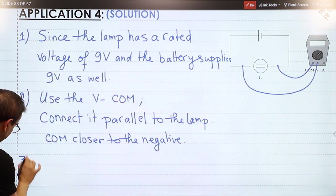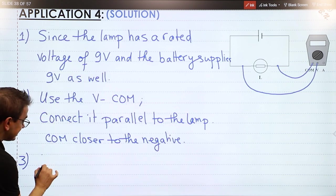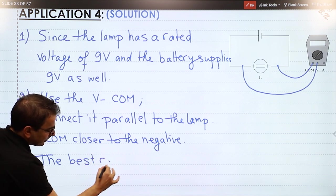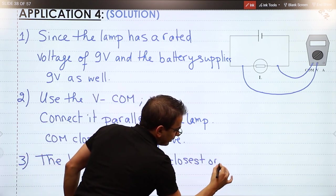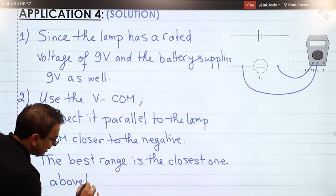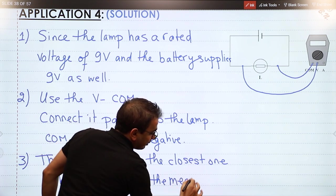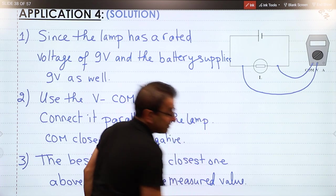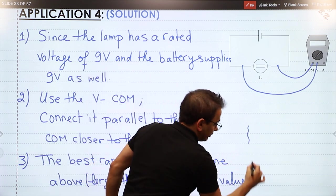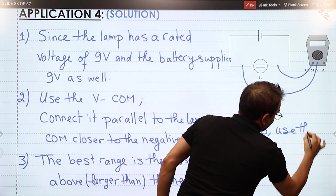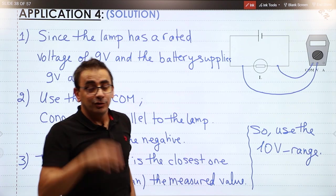For part 3, the available ranges are 2, 10, 20, and 200 volts. The best range is the closest one above the measured value - larger than the measured value. We are measuring 9 volts here. So 20 is acceptable, 10 is acceptable, 200 is acceptable - but the most suitable one is the 10 volt range, as it is the closest above 9 volts.